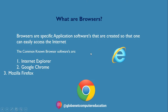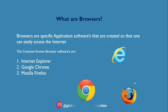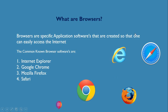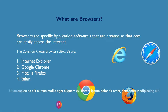Next we have Mozilla Firefox — this icon right here. This is one of the latest browsers; it's fast and people use Chrome and Firefox interchangeably. Next we have Safari — this icon here — which you'll mostly find on Apple devices like iPhones and MacBook. It is also quite a good internet browser.